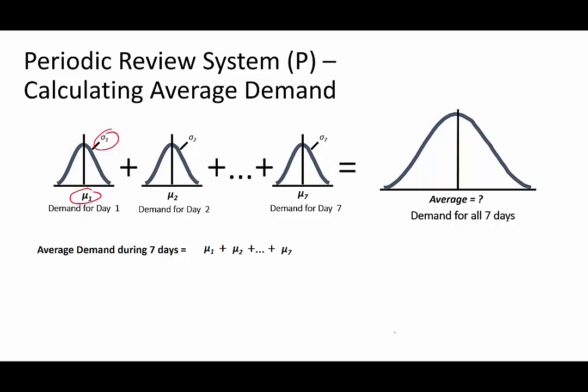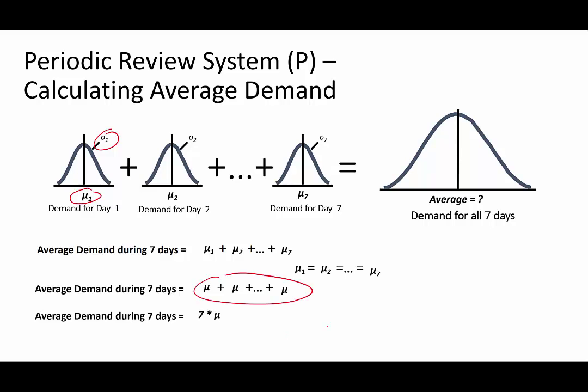Based on simple probability rules, the average demand during seven days is equal to the sum of all the averages. If the demand during every day follows exactly the same distribution — that is, it has the same mean and variance — the average demand during seven days can be further simplified as seven times the average demand per day.